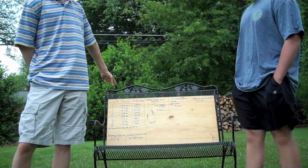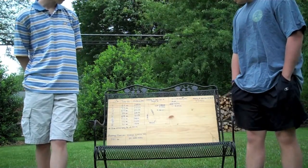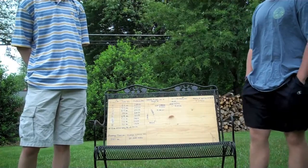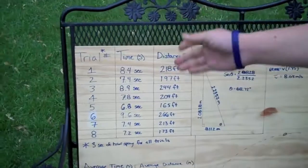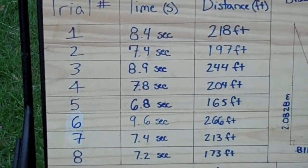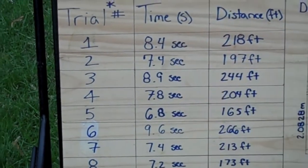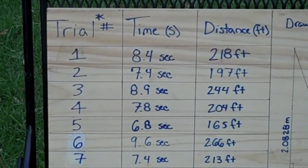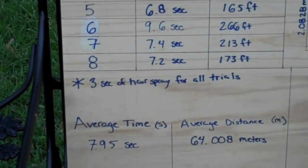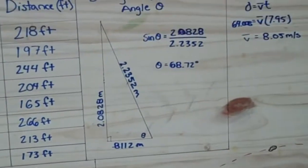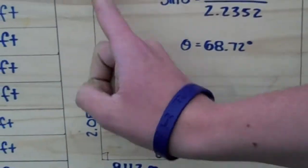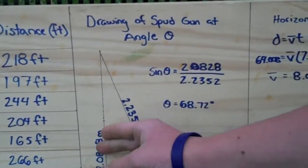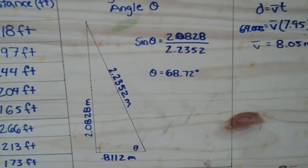After shooting our spud gun, we made a data table with all of our inputs and outputs and got an average velocity. We had eight trials with times and distances in feet. We had an average time of 7.95 seconds and an average distance, which we converted to meters: 64.008 meters. We also have a drawing of the angle — a triangle representing the spud gun on a wood post — where we measured distances and found theta to be 68.72 degrees.